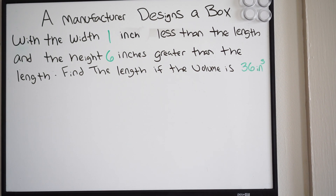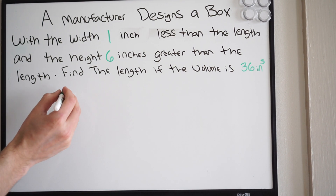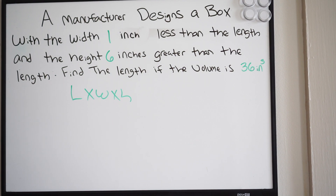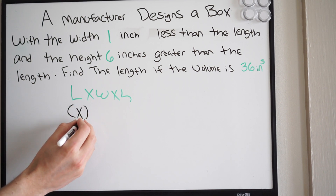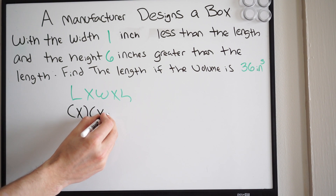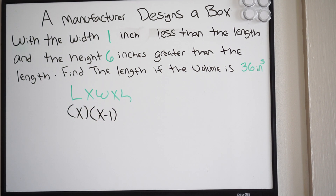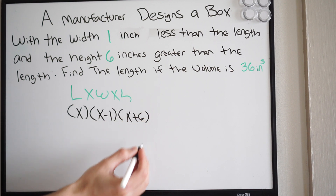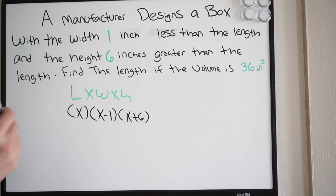In order to do this problem, we need to know the equation for the volume of a box, which is simply length times width times height. From here we can start filling in our values. The length is unknown so we call it x. The width is 1 inch less than the length, so x minus 1. The height is 6 inches greater than the length, so x plus 6. This is all equal to the volume, which is 36 inches cubed.